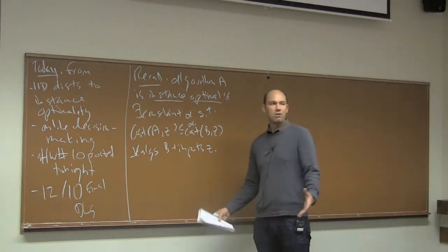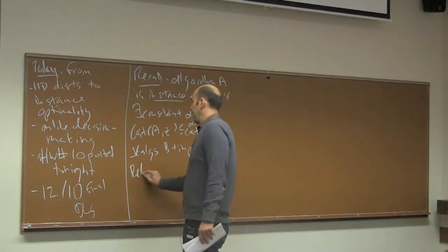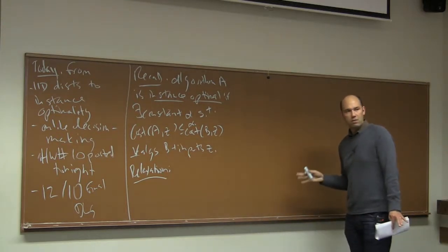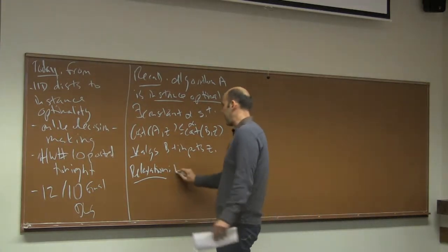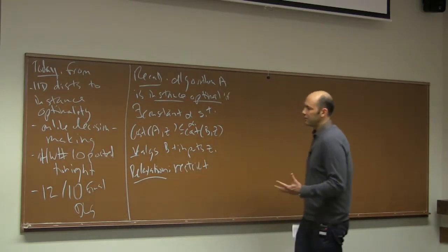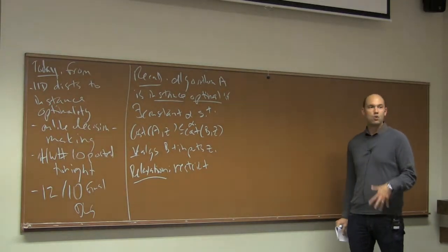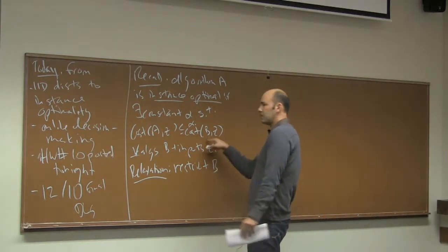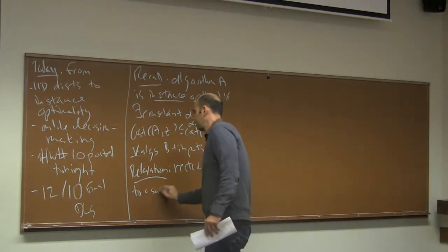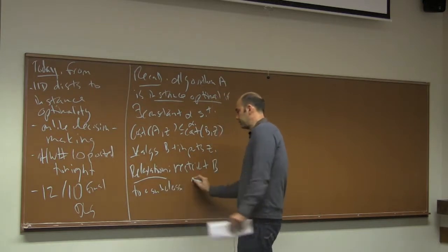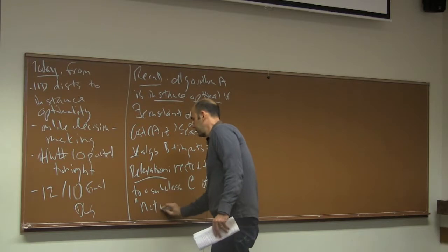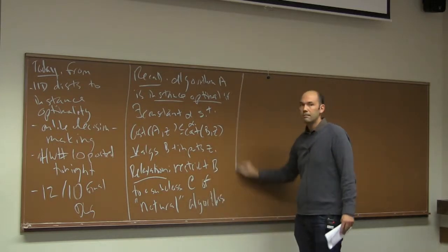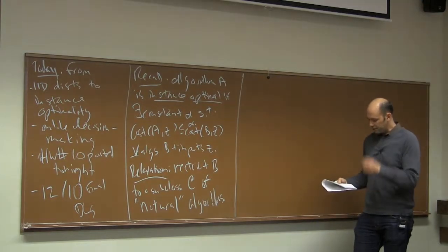It's so strong that often these algorithms don't exist, at least for values of alpha that are interesting. So we mentioned a couple of relaxations: one is throwing in the alpha, and the other relaxation — the one I'm really going to focus on today — is saying maybe algorithm A isn't as good as every other algorithm on every input, but maybe it's as good as every other reasonable or natural algorithm B on every single input.